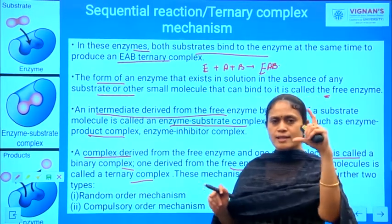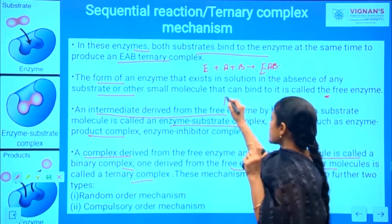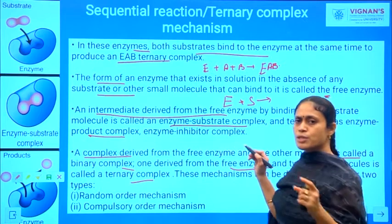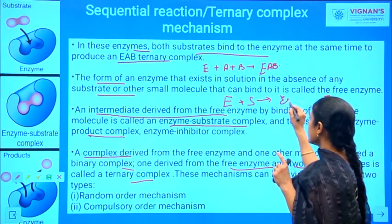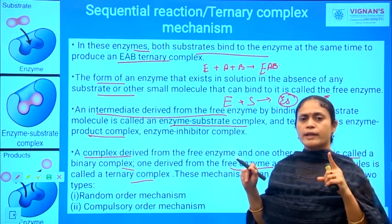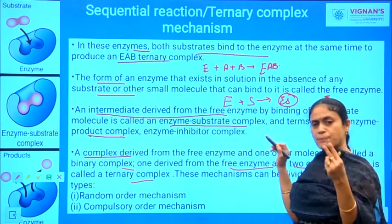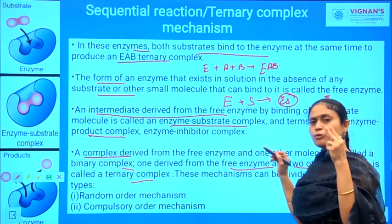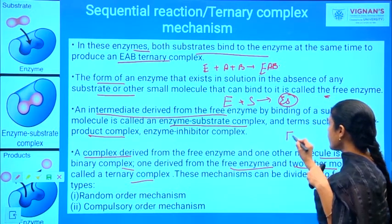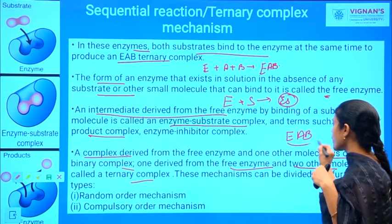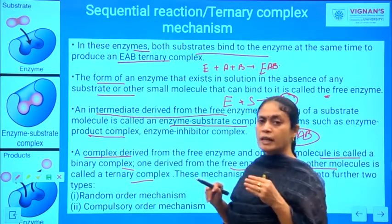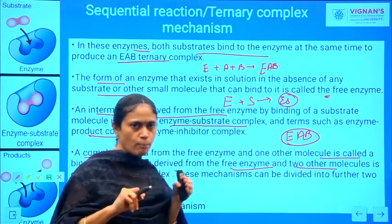Consider one enzyme molecule and one substrate molecule — there is a chance of formation of a binary complex, as only two molecules are involved. When two substrate molecules bind with the enzyme molecule, there is a formation of a ternary complex: one enzyme molecule and two substrate molecules. Now you have a clear idea about what is a binary complex and what is a ternary complex.